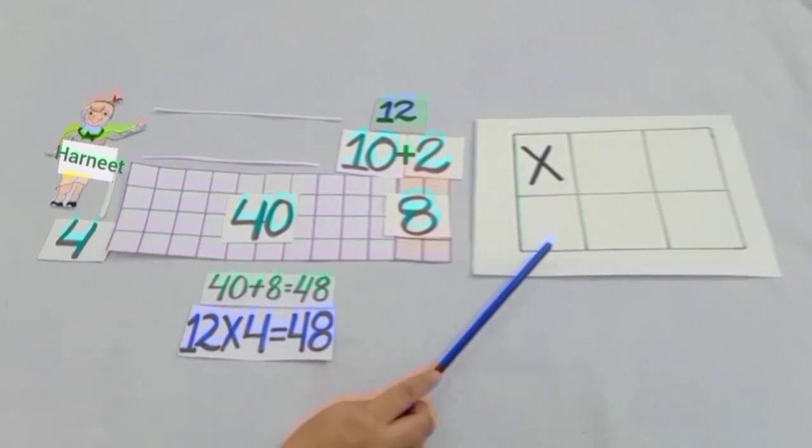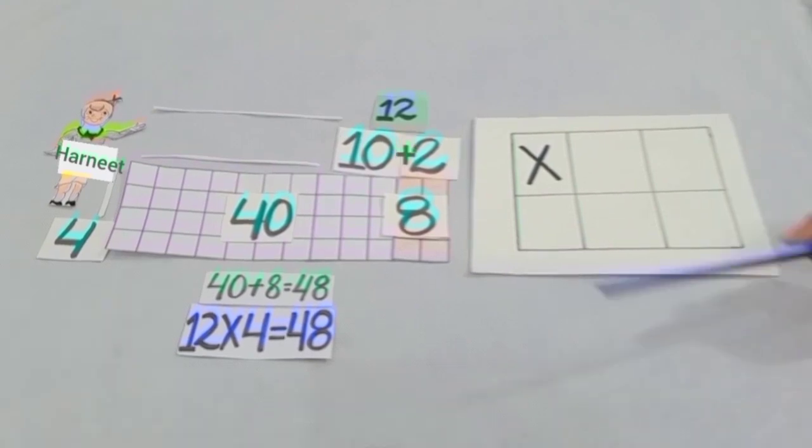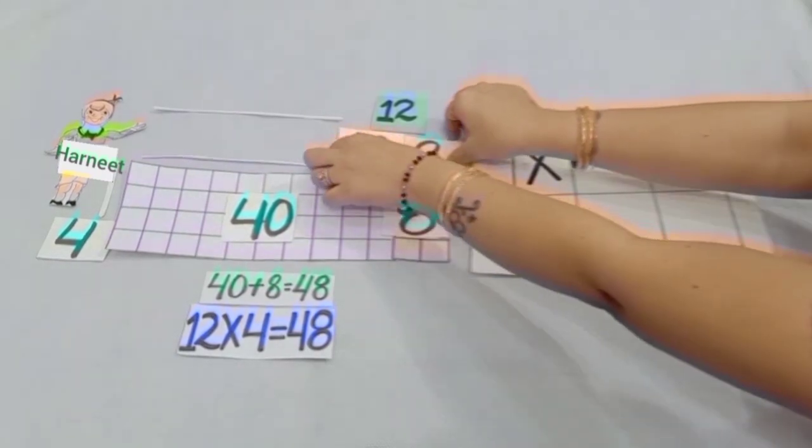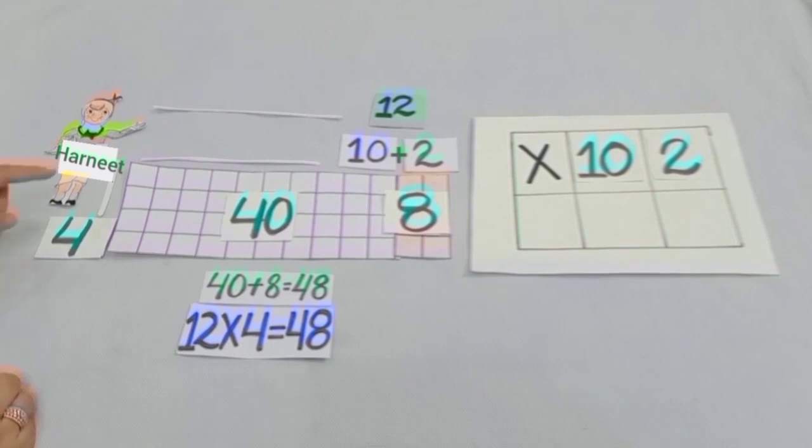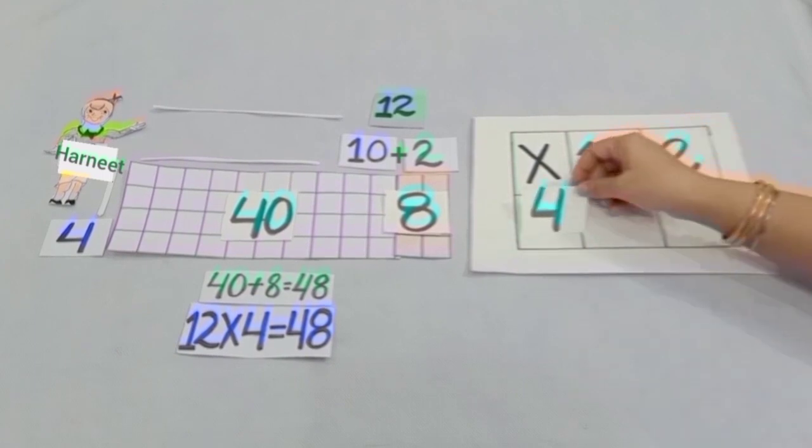Now we will find the answer in the writing form. Students, see here we have 10 and 2. We will write it here, and here we have 4, and we will write it here.